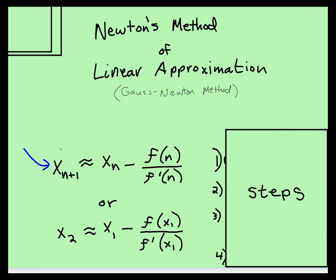you're finding an x value on an axis. How you get to this x value is you have an initial guess, sometimes referred to as x naught, subtract f of n divided by f prime of n. Or here's another way to look at it: you get to the second x value by taking the first x value, subtract f of x of the first value divided by f prime of the first value. And here are the steps.